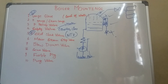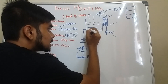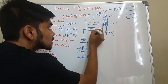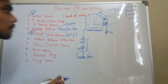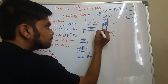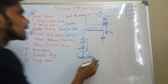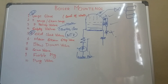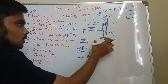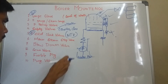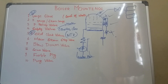The next one is your blow down valve. The water used in a boiler is demineralized water, but 100% demineralization cannot occur, so some sediments may settle at the bottom of the boiler. The blow down valve is present to suck those sediments out of the boiler.